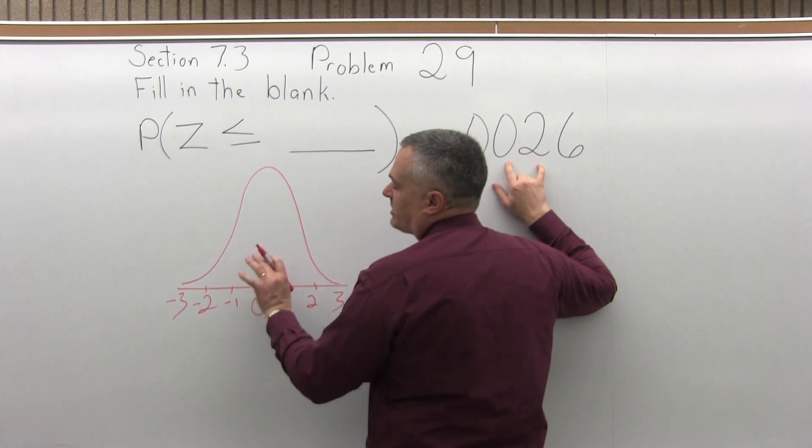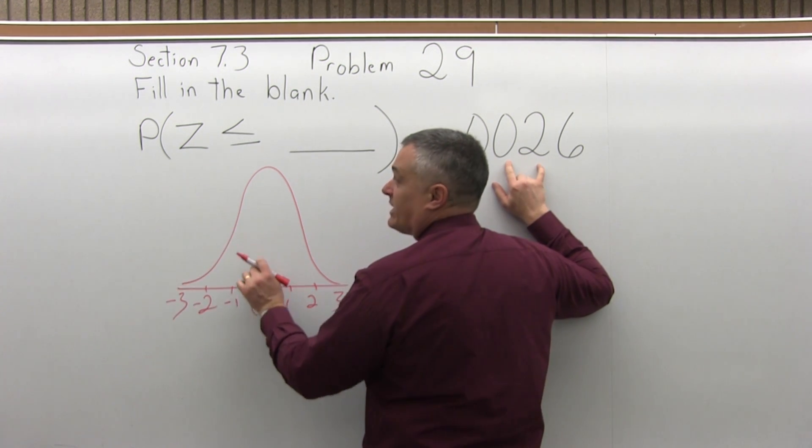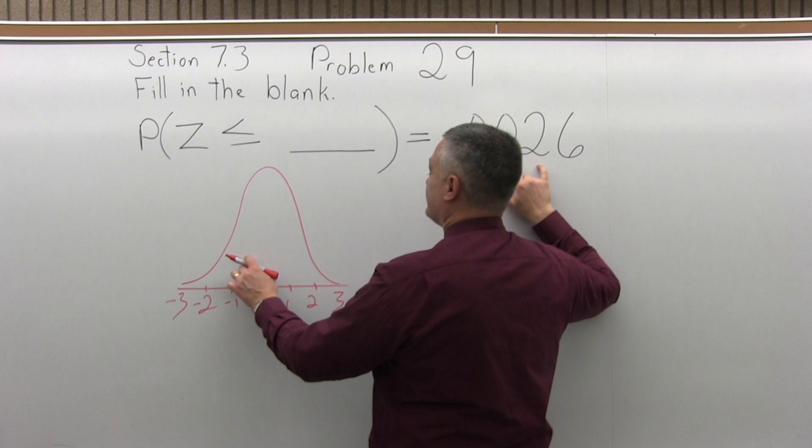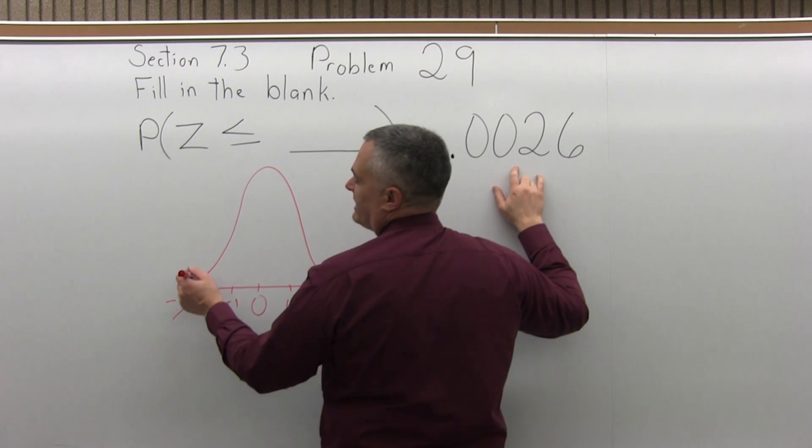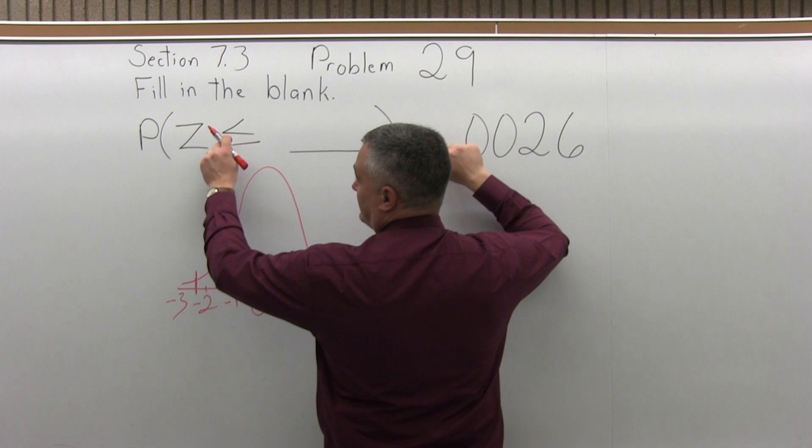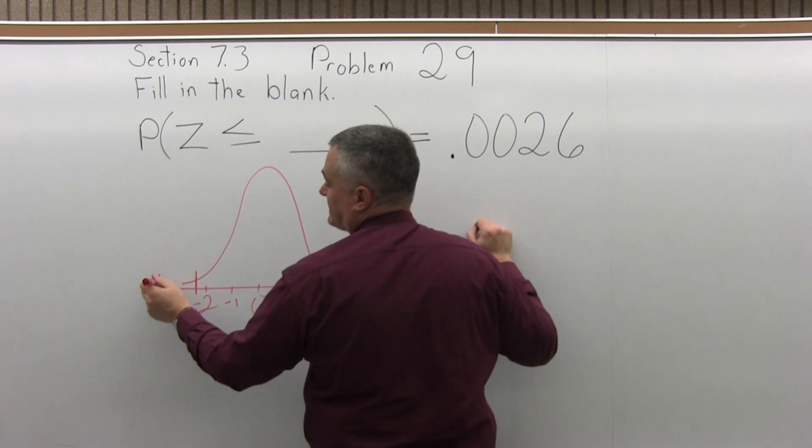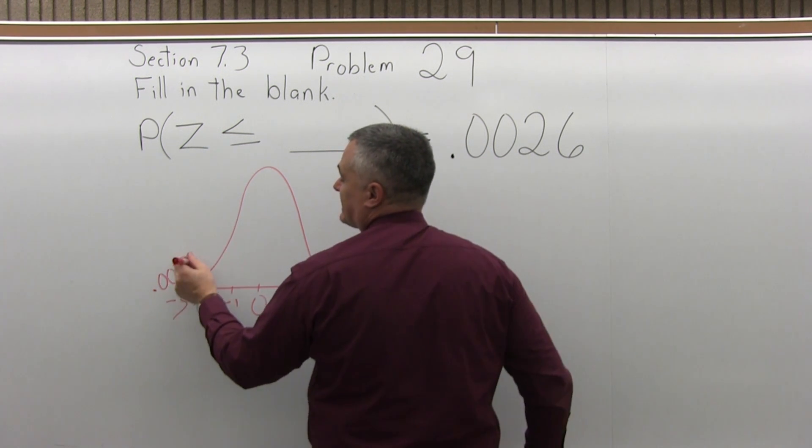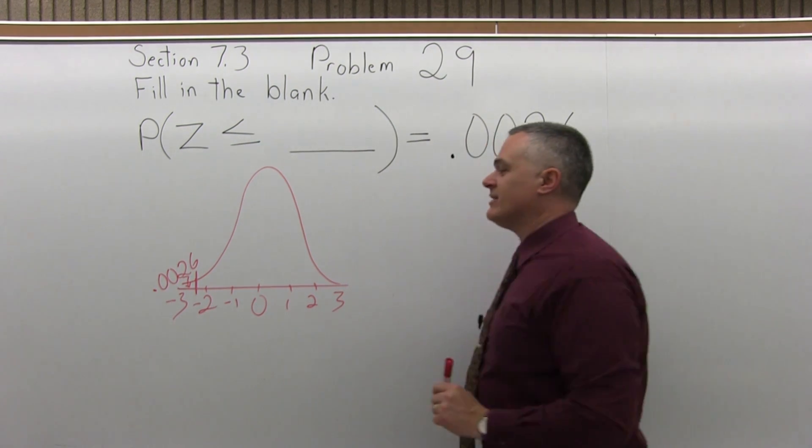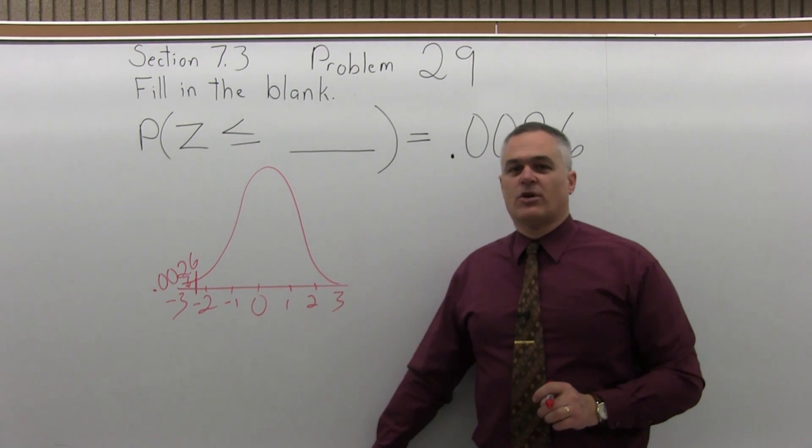And I figure if it's right in the middle, the probability of being less than this middle value is .5. So this is .00 something. So it's going to be way out here. So the probability of being less than is .0026 in that tiny little bit at the end, the very left end of the bell curve.